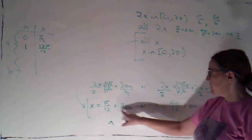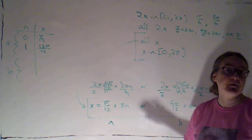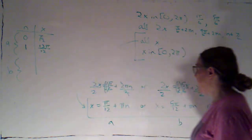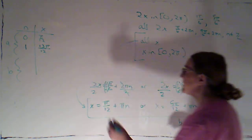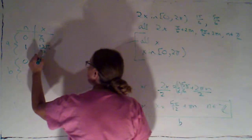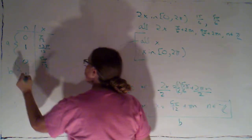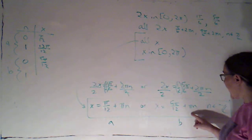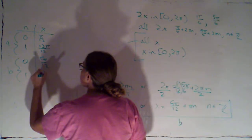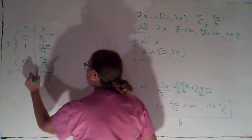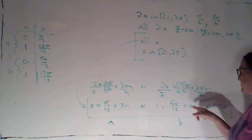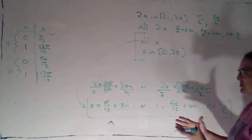And if n was 2, I'd get pi over 12 plus 2 pi. That would be bigger than 2 pi. So, those are the two solutions that I get from a. From b, if n is 0, I'm going to just get 5 pi over 12. If n is 1, I'm adding pi to that. And again, pi is just 12 pi over 12. So, that would give me 17 pi over 12. And if n were 2, I'd have 5 pi over 12 plus 2 pi. That's too big.